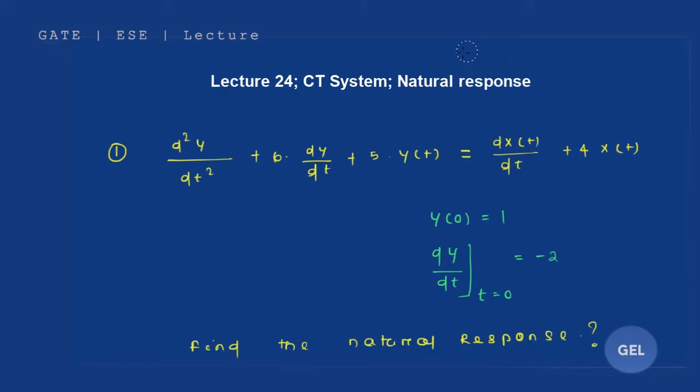We are in lecture number 24 of Signals and Systems. This is our continuous time systems lecture, and here we are going to understand how to calculate the natural response from a practical example point of view. The next video lecture will cover what natural response actually means in detail.